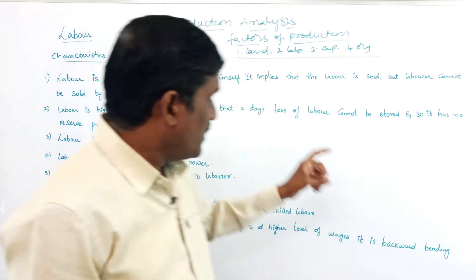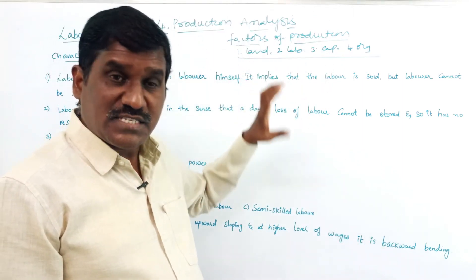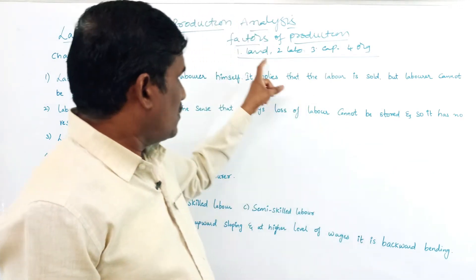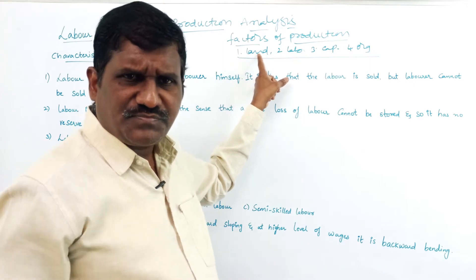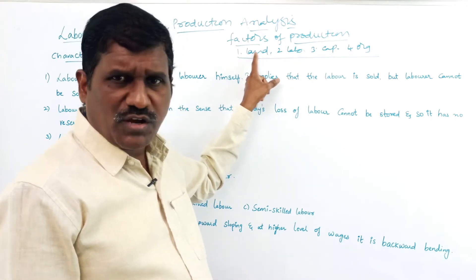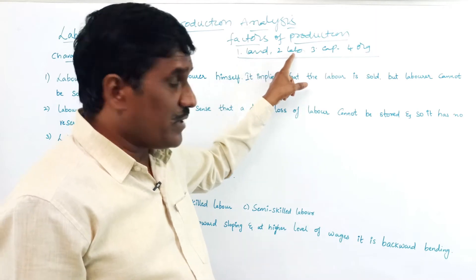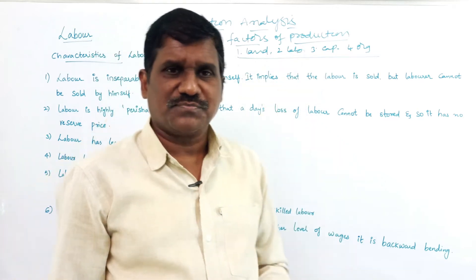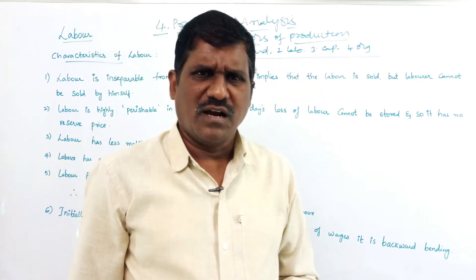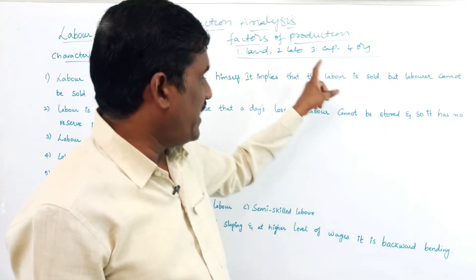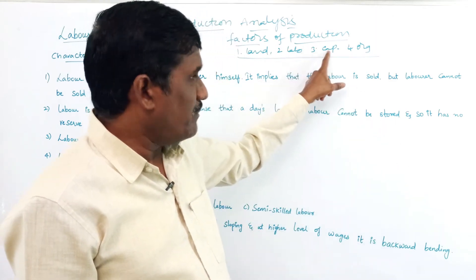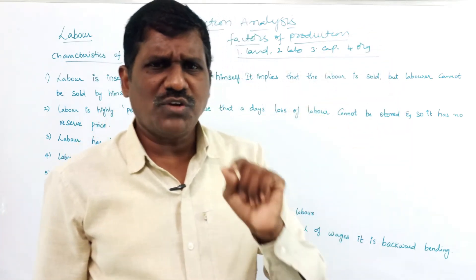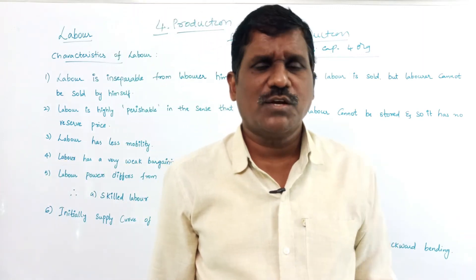Land is compulsory. I already discussed in the previous videos the characteristics of land. Without land, we cannot produce any goods and services. Similarly, without labor, we cannot imagine the production of goods and services. Capital is also essential, and organization is also essential. Without any factors of production, we cannot produce any goods and services.